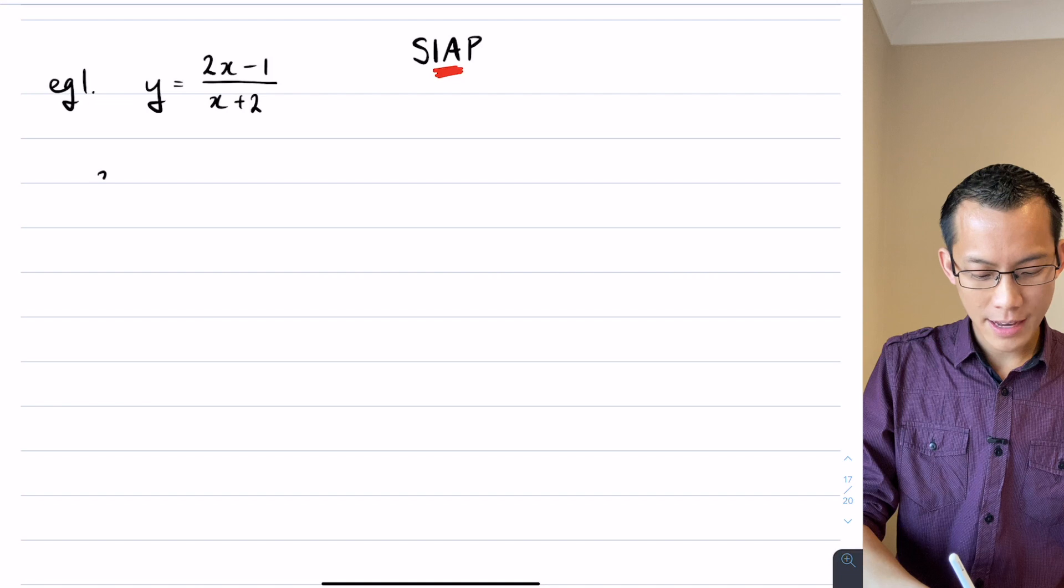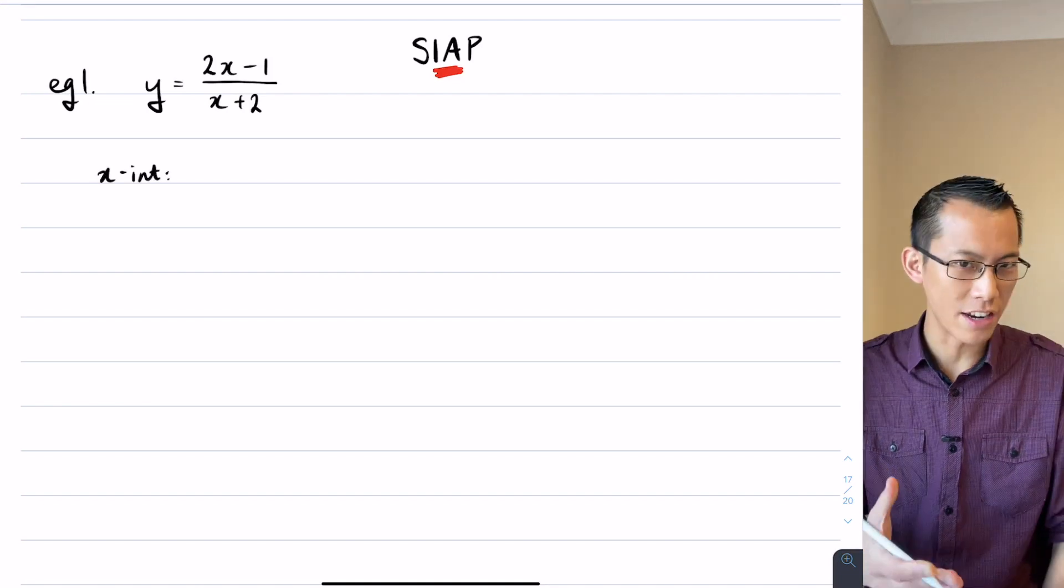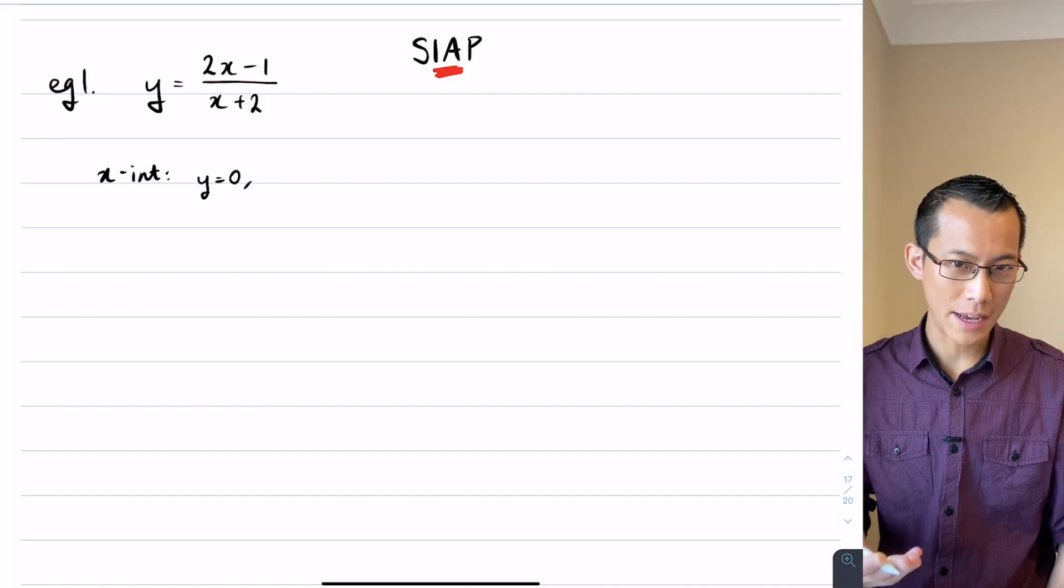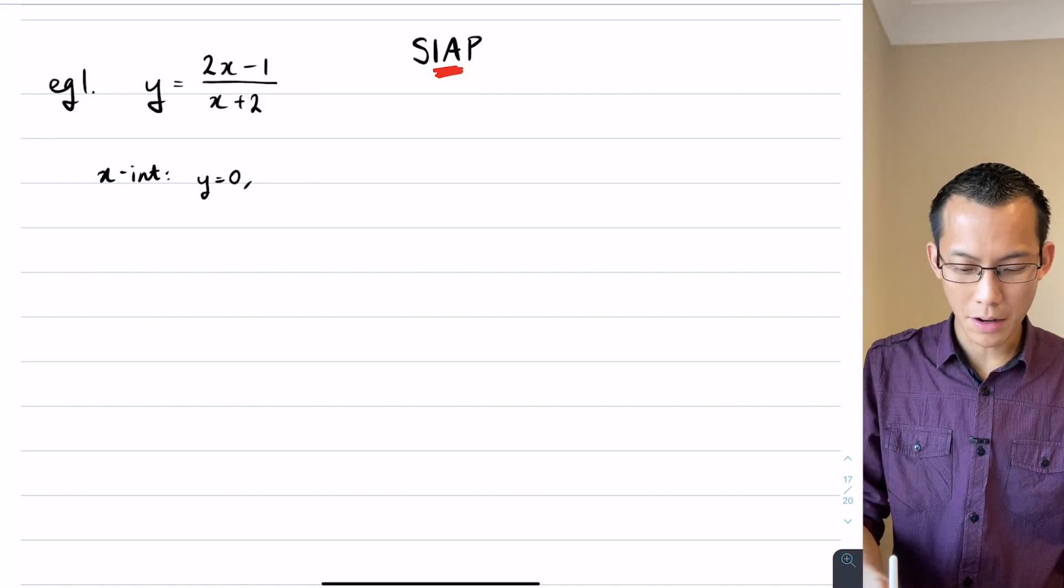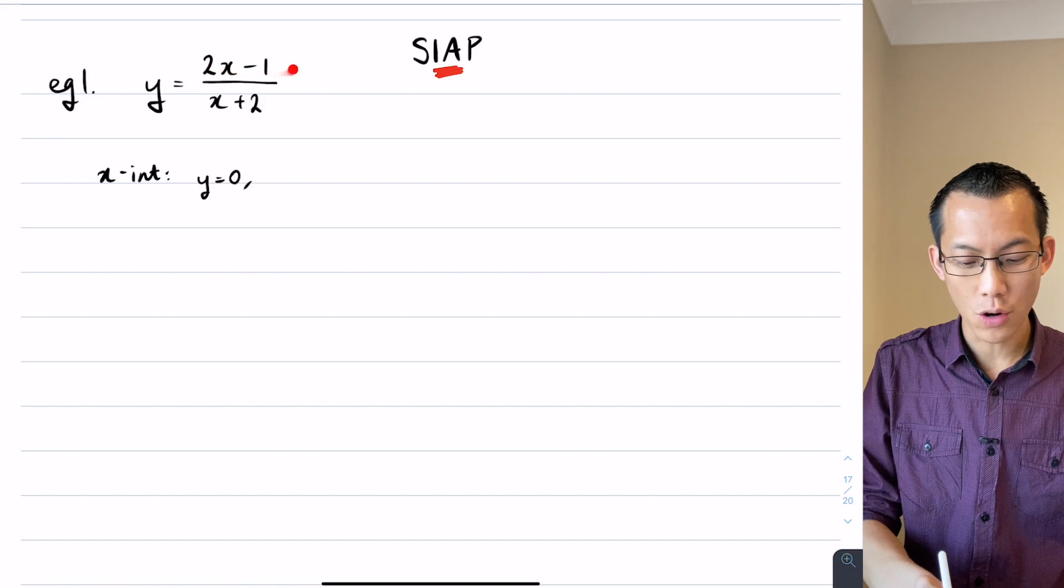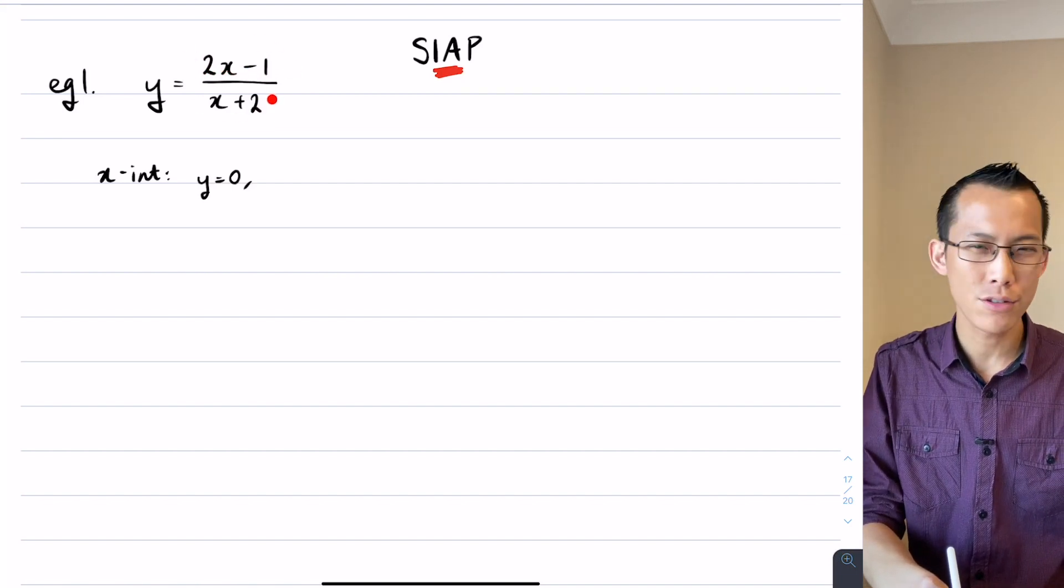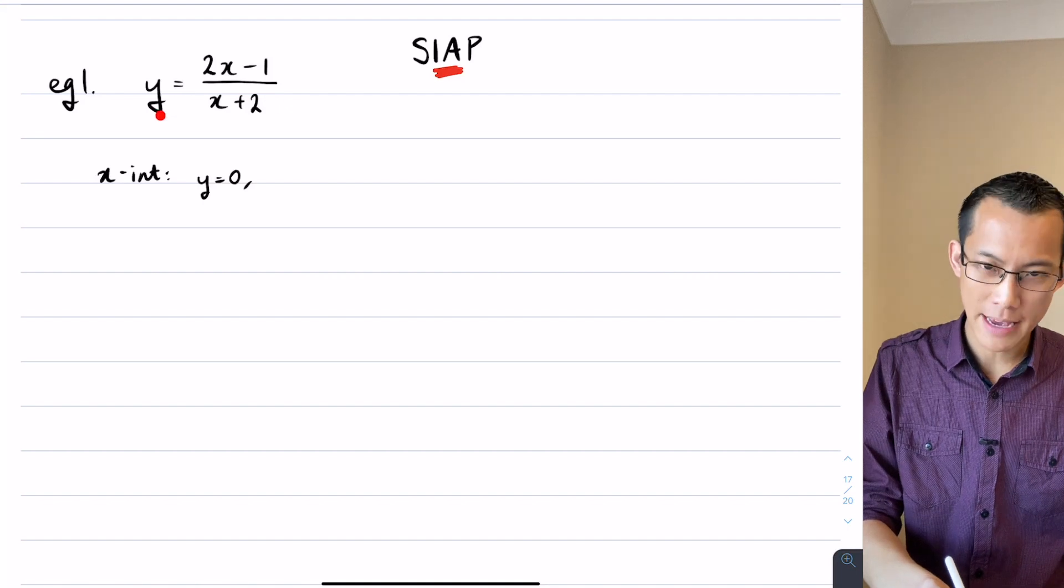We're going to find x-intercepts first, and at this point you're kind of like I know how to do this, right. I let y equals 0, and in this case if y equals 0, I'm going to want the numerator up here to also be 0. I don't care what the denominator is. There's no value you can put in the denominator that makes y equals 0.